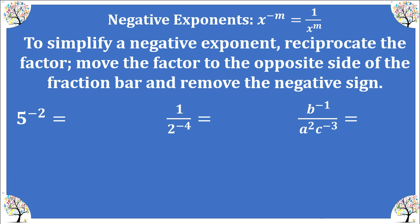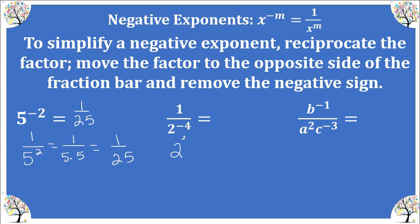Let's practice these. For 5 to the negative 2, we first make a positive exponent: 1 over 5 to the positive 2. Simplifying, 5 to the negative 2 is the same as 1 over 25. In our next example, the power with the negative exponent is in the denominator, so we bring it to the numerator. Since there's just a 1 left, we don't need it, so we get 2 to the positive 4, which equals 16.